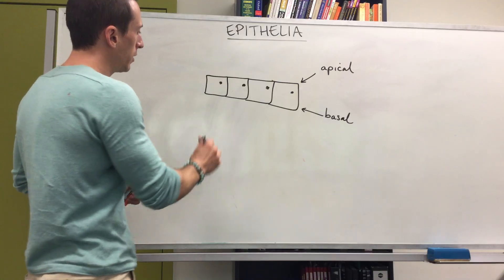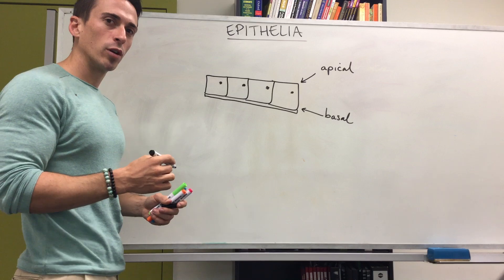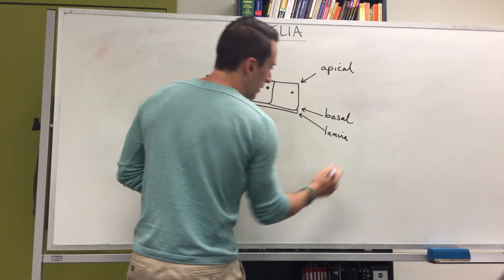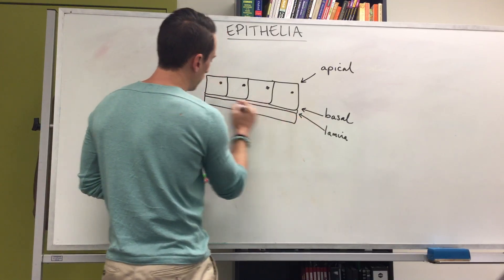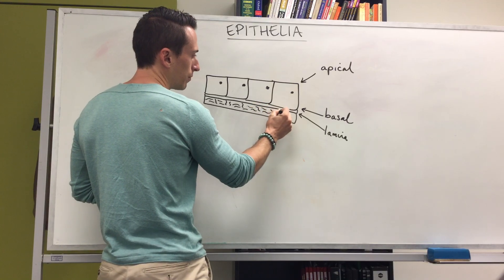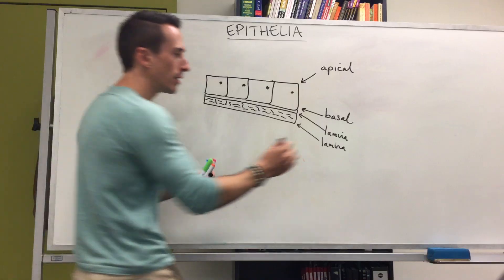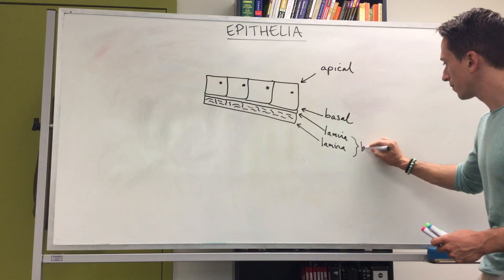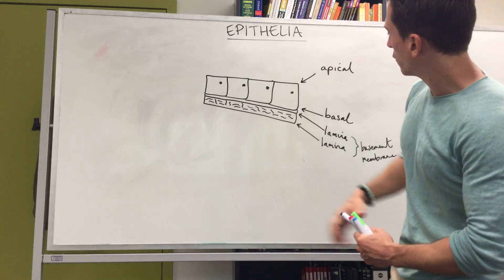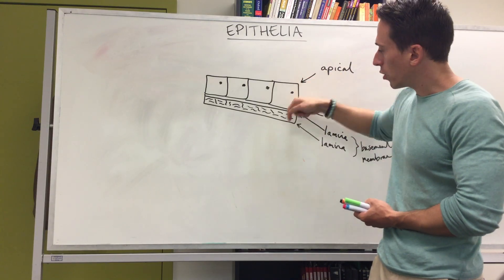Underlying epithelial tissue at the basal side we have a lamina — there are actually two laminas, and they're both connective tissue. Connective tissue is made up of gels and fibres and provides structure and support. Together these two laminas make the basement membrane. The basement membrane is important because it tells epithelial cells: this is the bottom, this is the top, do not penetrate through.